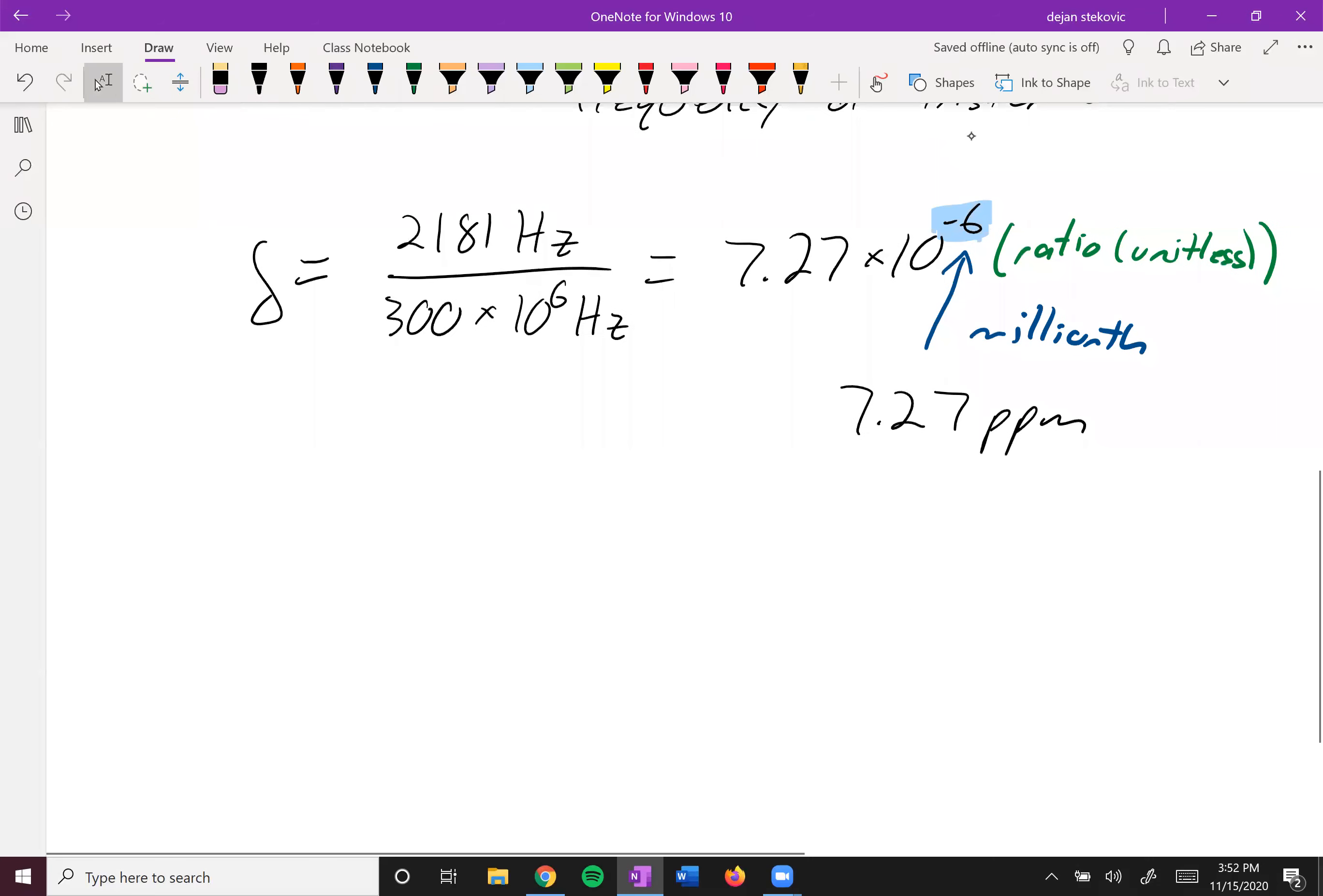It's not that important, to be honest. What you really want to know is that almost all organic compounds show up somewhere between zero and 12 parts per million.